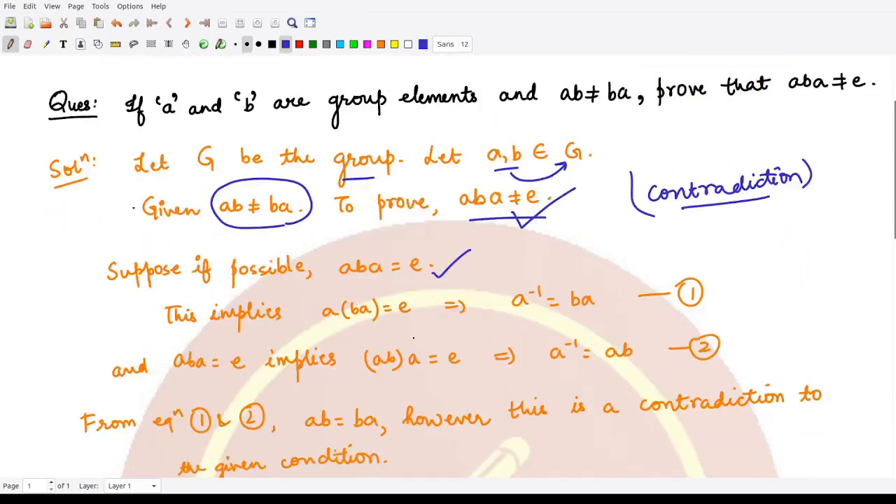So therefore this would imply you can apply the brackets onto these two terms using the associative property. So that from here you obtain a into something is equal to e, so that means this element has to be the inverse of this element which is a. So a inverse is ba. This is equation one.